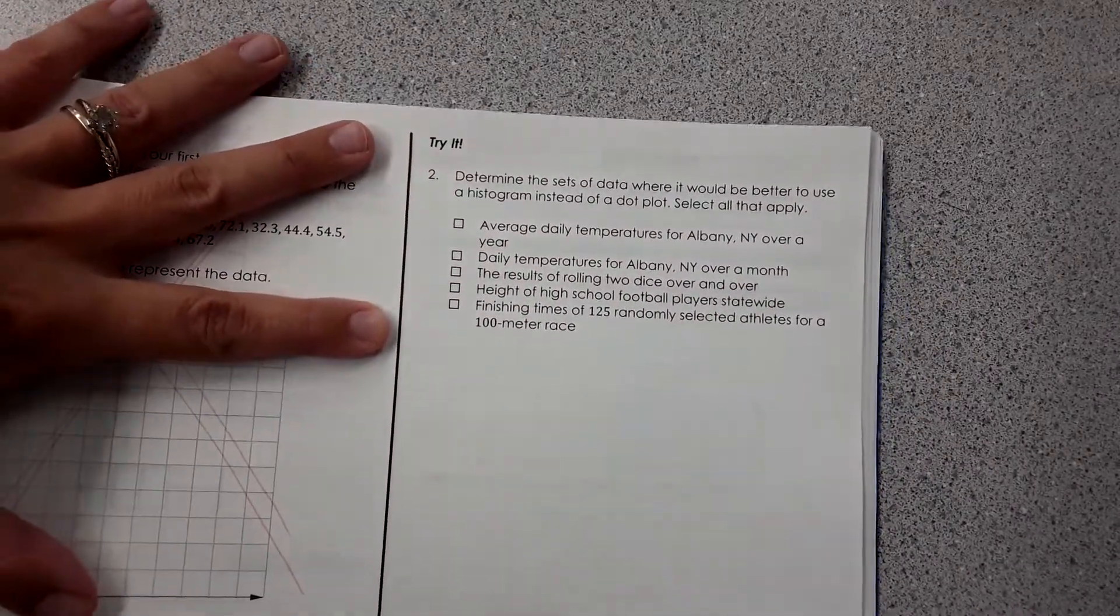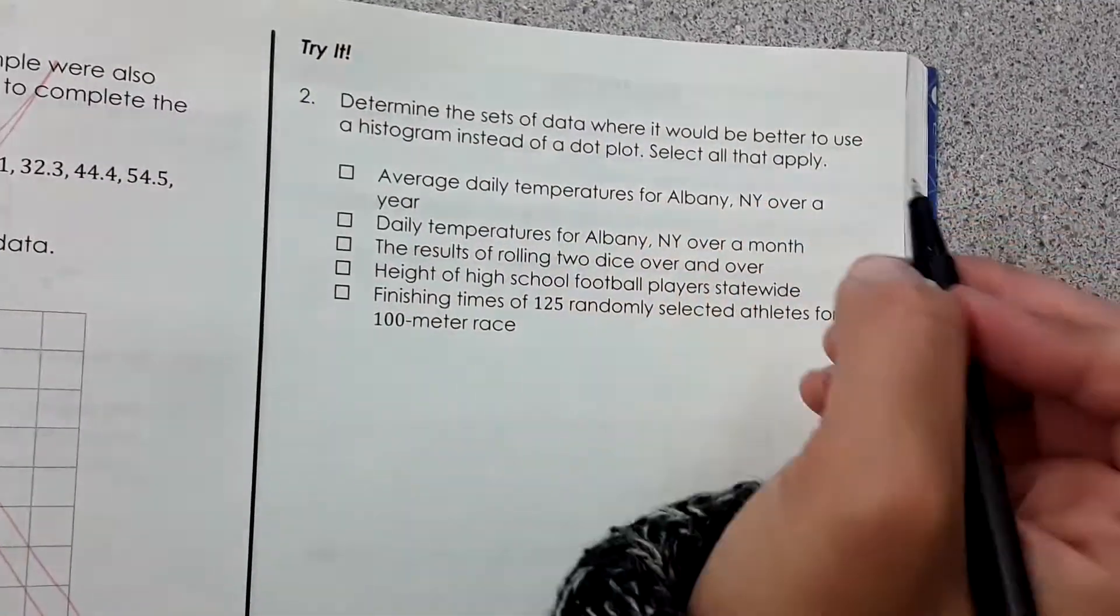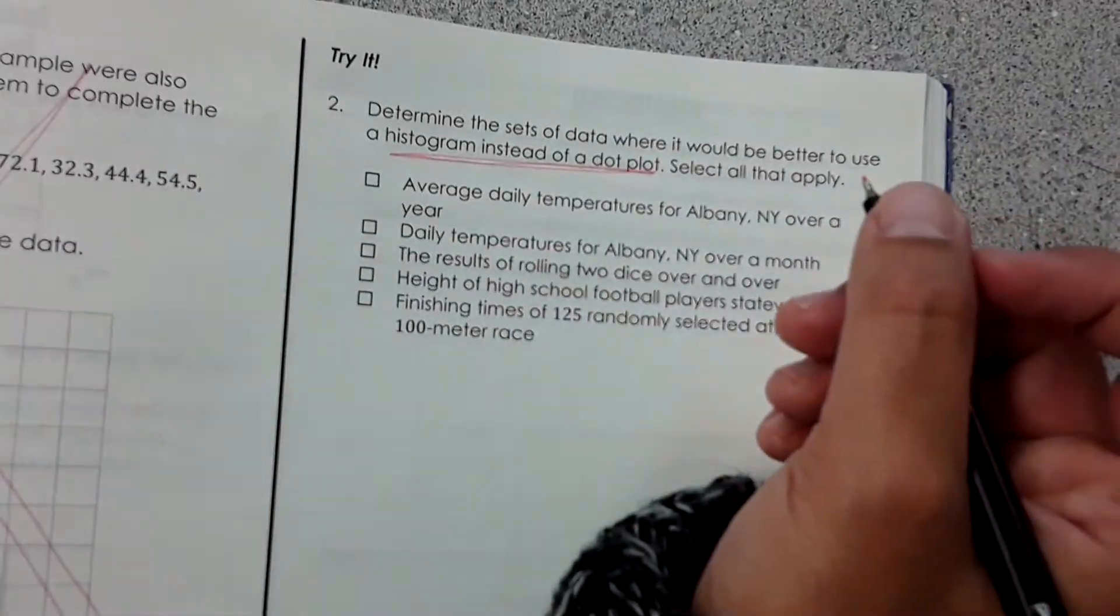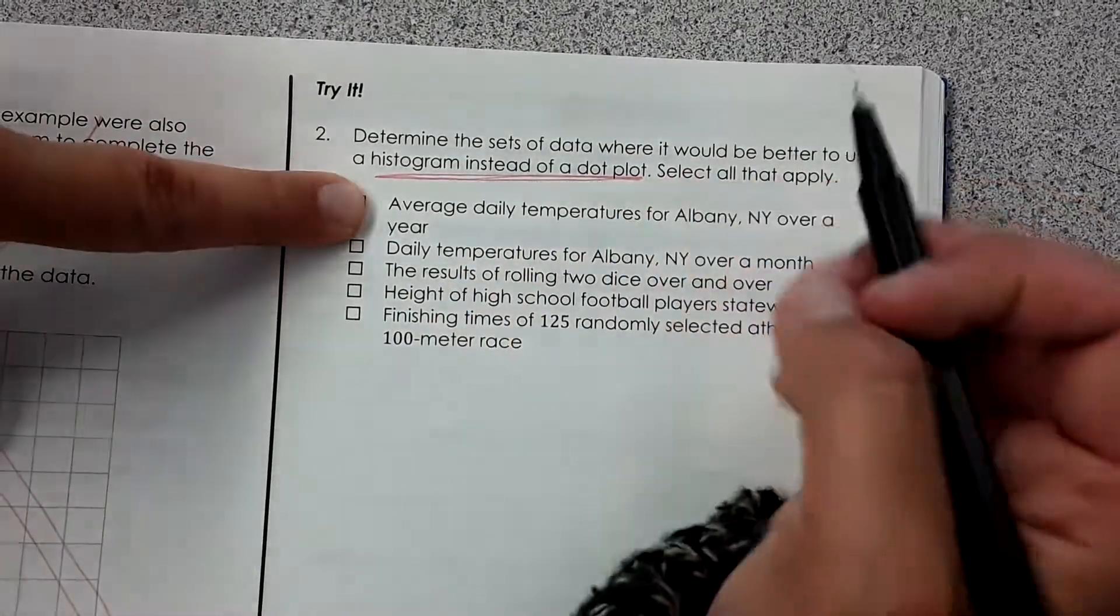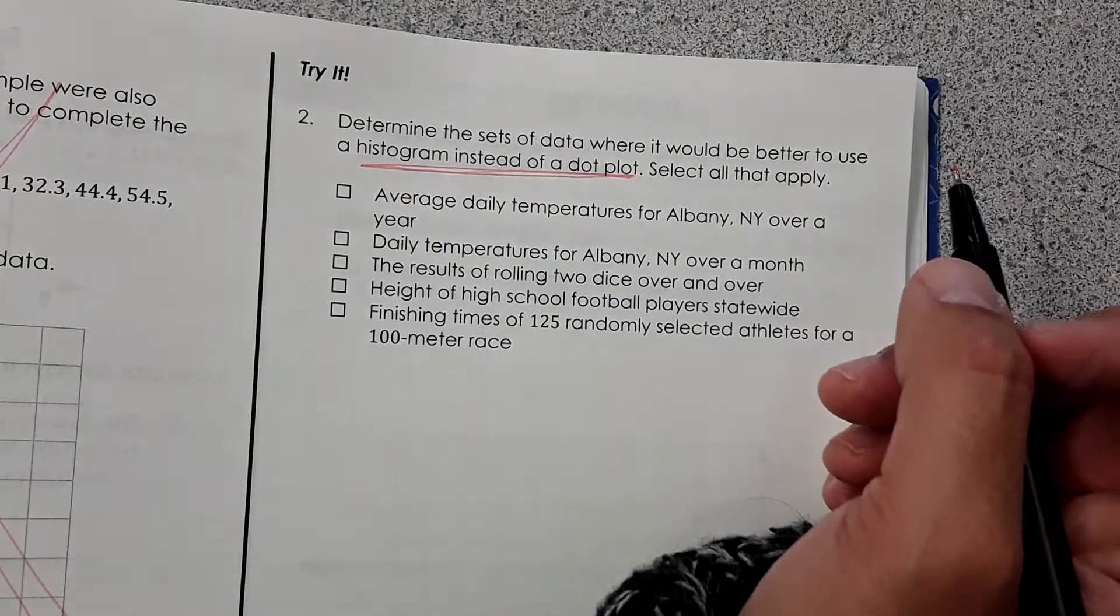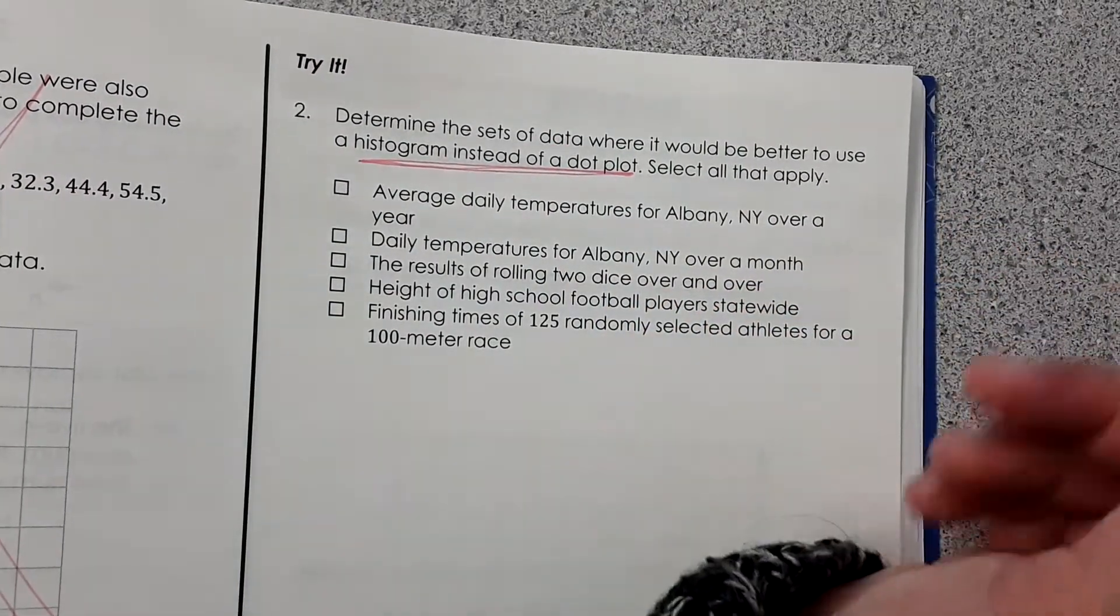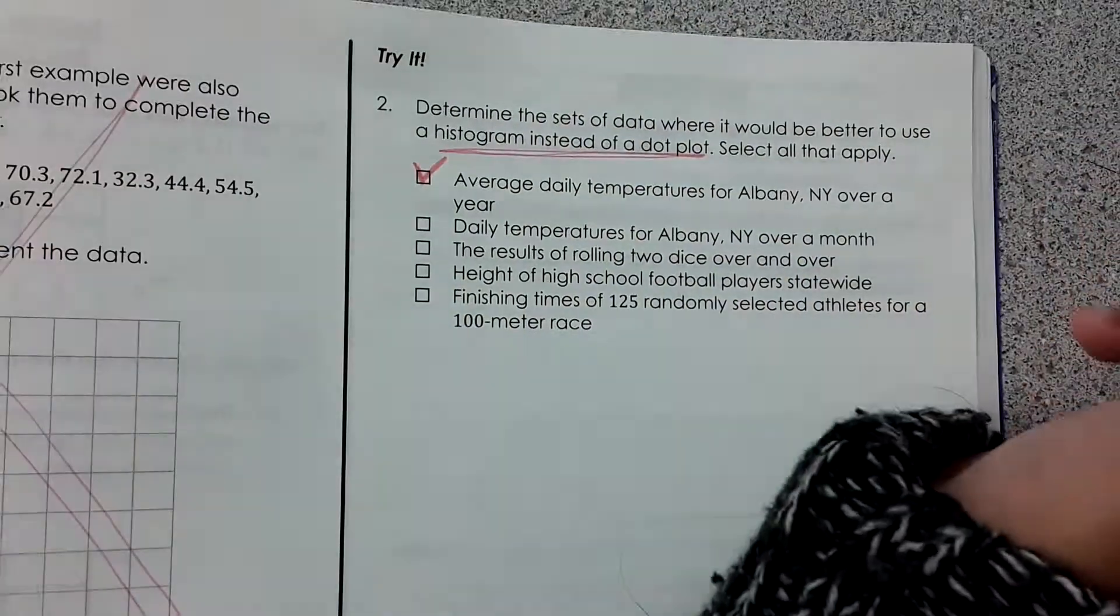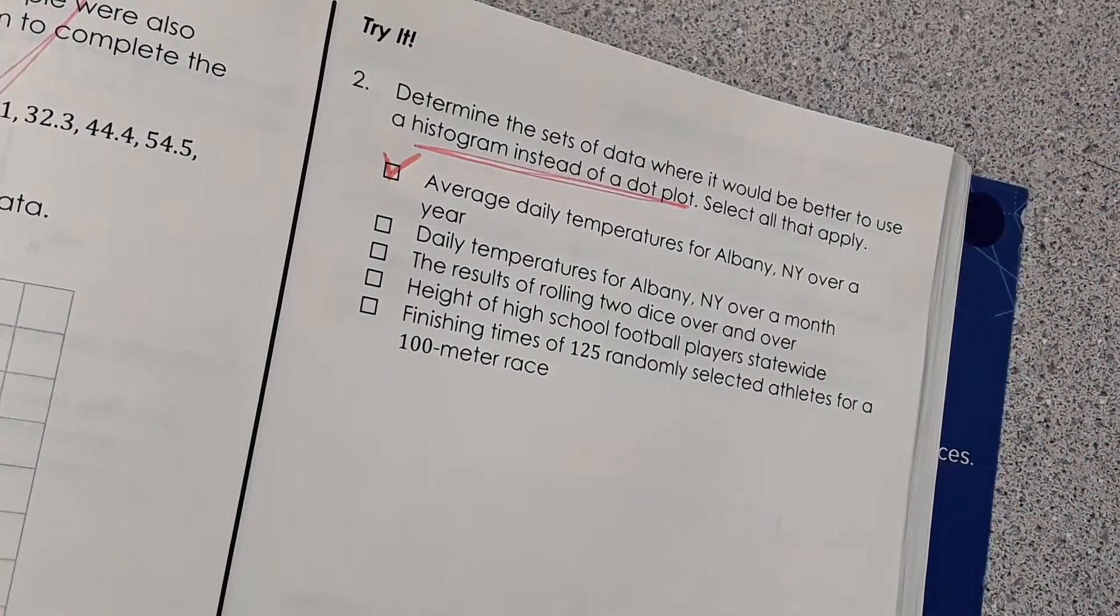This one I've definitely seen on standardized testing. It says determine the set of data where it would be better to use a histogram instead of a dot plot. Select all that apply. So as I mentioned, histograms are better when you have continuous data with decimals and different things. A dot plot would be better if you're counting whole numbers. So average daily temperatures for Albany, New York over a year would be better in a histogram because there would be so many numbers. And it would be decimals and stuff like that too. It would be a lot to look at on a dot plot.